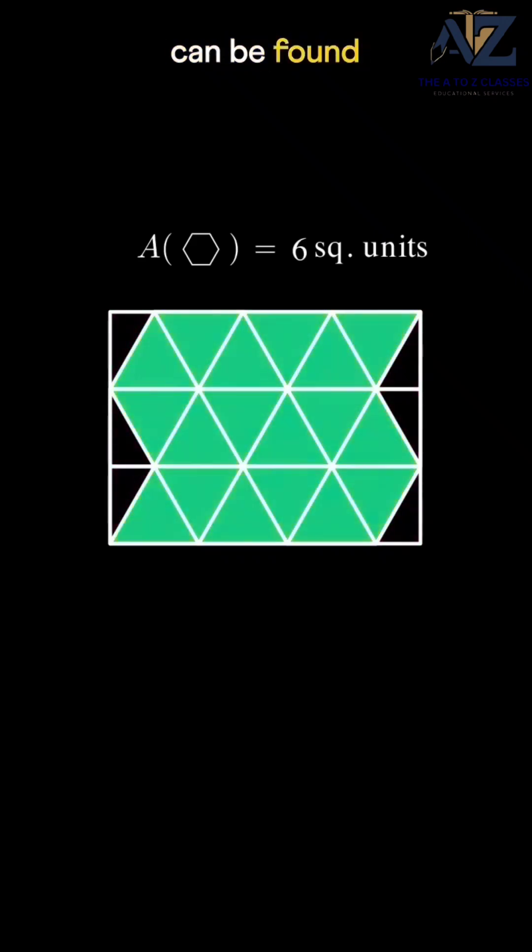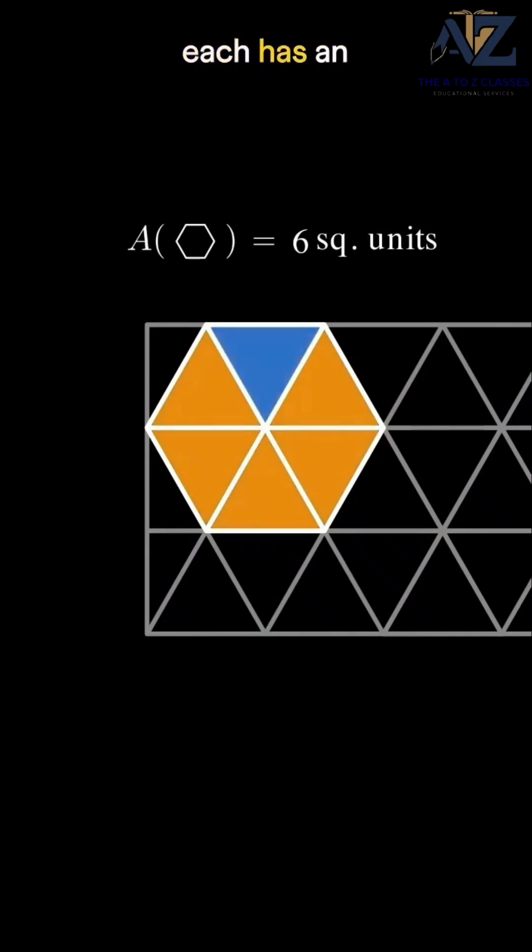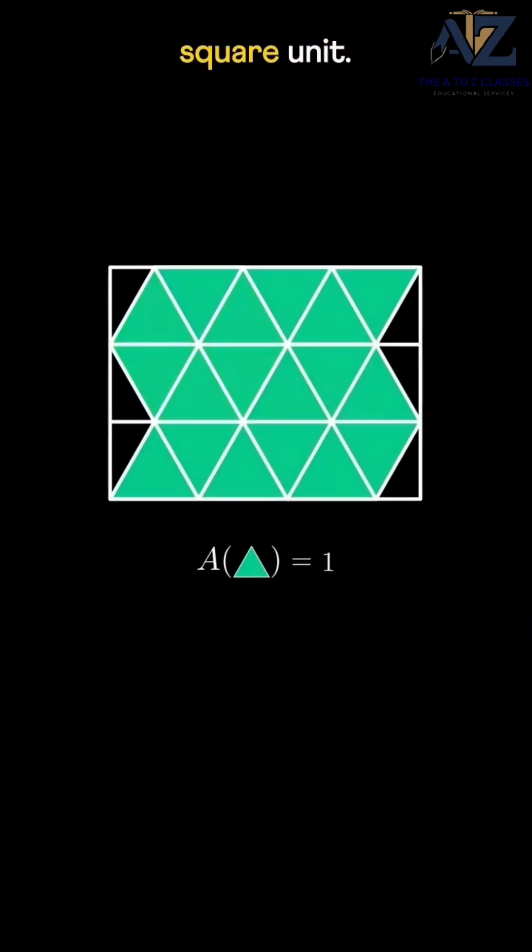The area of the larger one can be found using the hexagon. Since it contains six of these, each has an area equal to the total area divided by six. That is, one square unit.